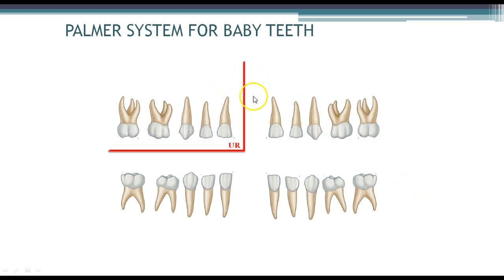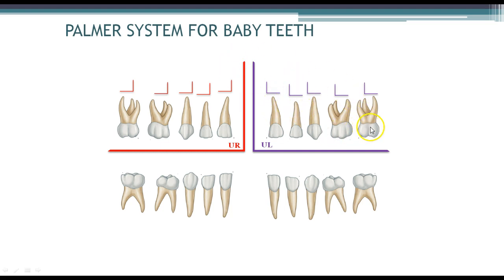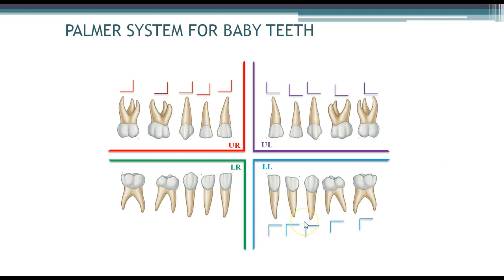We're going to start with our upper right, which goes from the middle and off to the right. Each tooth will have that same shape aligned with it — the backwards L shape. Then we have our upper left, and that shape is going to be associated with each tooth in the upper left quadrant as well. Different colors are used so you can see the contrast and which shape belongs to which side. Then you have your lower left, and each tooth would also be aligned with that same shape, and your lower right.